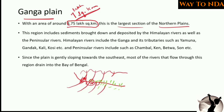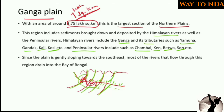The important Himalayan rivers flowing in the Ganga Plain include the Ganga and its tributaries — Yamuna, Gandak, Kali, and Kosi. The peninsular rivers include Chambal, Ken, Betwa, and Son. These peninsular rivers are also forming a part of the Ganga Plain.